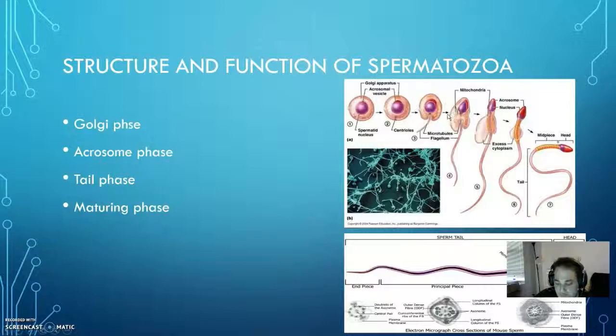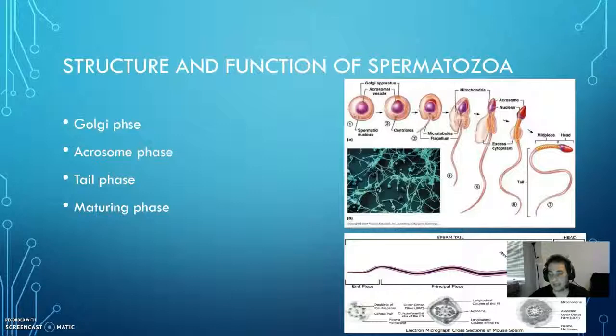The acrosome is a very important part of the spermatozoa located at the head, and it's actually going to be used to break through the egg's protective layer and penetrate it to deliver the DNA. That acrosome is formed during the second phase.